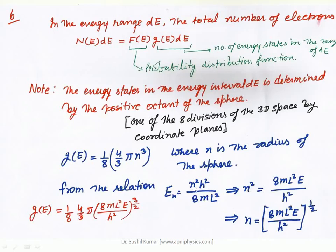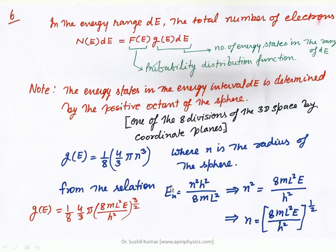From the relation En = N²h² / (8mL²), which is the formula for the energy of an electron in the nth state, where L is the range of the one-dimensional infinite potential well, h is Planck's constant, N is the quantum number, and m is the mass of the electron — N is determined from this relation as N = (8mL²E / h²)^(1/2). We put this value of N into the energy relation formula for quantum states.